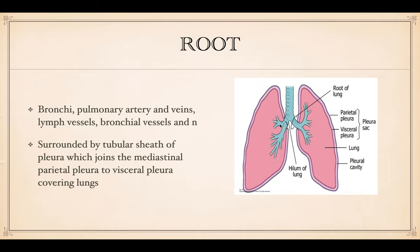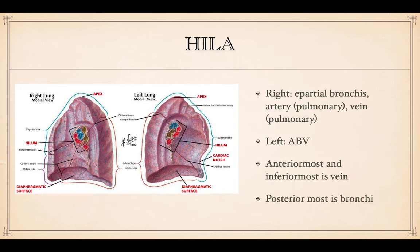The root of the lung is an important distinction from the hilum of the lung, which is actually inside the lungs. The root is surrounded by a sheath of pleura, and that joins the mediastinal parietal pleura — the thorax pleura — to the visceral pleura covering the lungs. At the hyla, on the right there is the bronchus, artery, and vein — B-A-V.